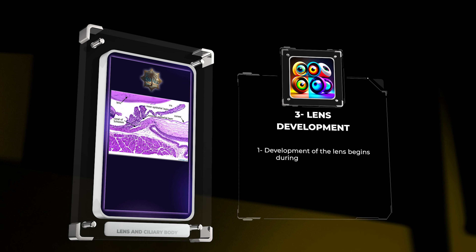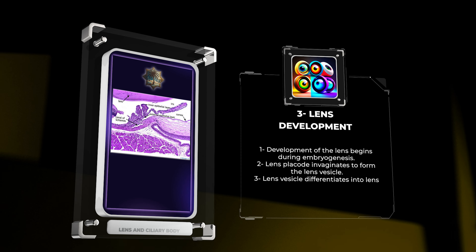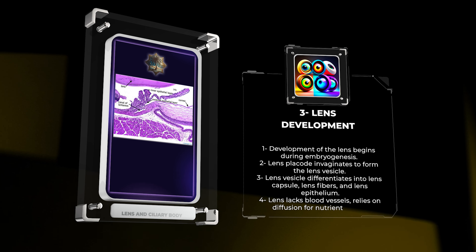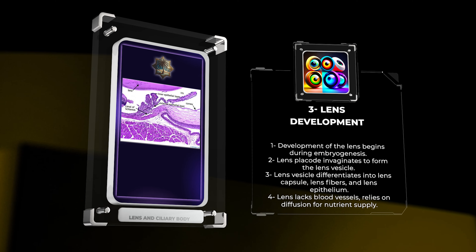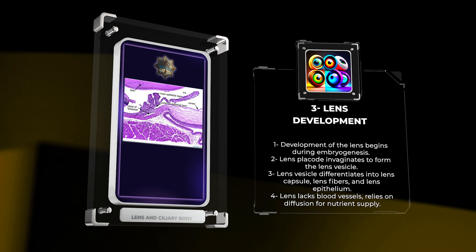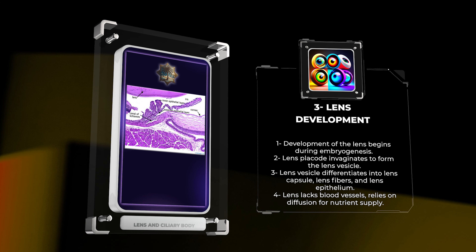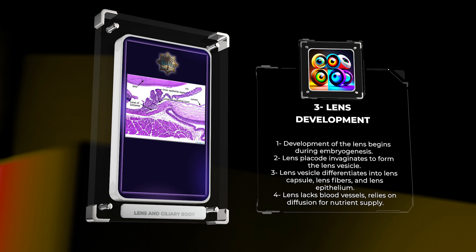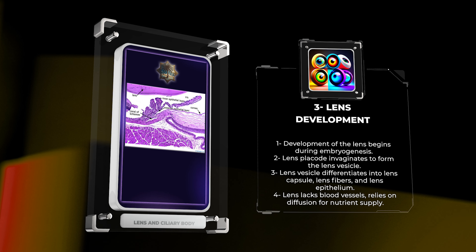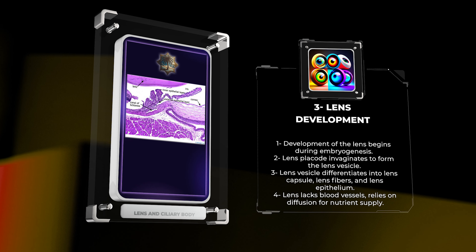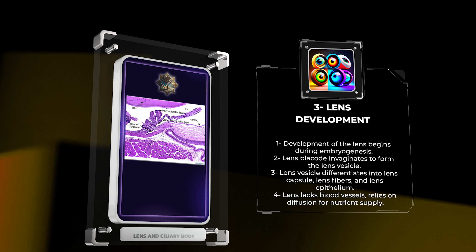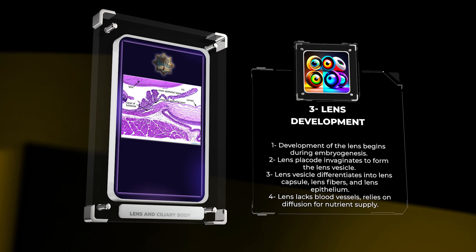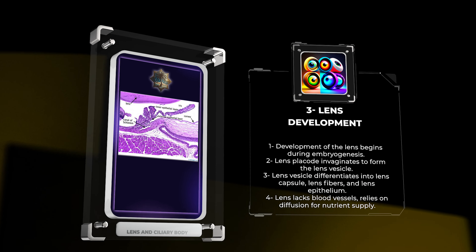Welcome to today's lecture on the lens and ciliary body. In this comprehensive script, we will delve into the intricate details of the histology, structure, development, function, pathology, pharmacology, surgical interventions, and aging aspects of the lens and ciliary body. Get ready to expand your knowledge and understanding of these fascinating ocular structures.